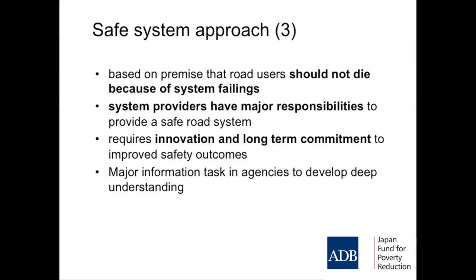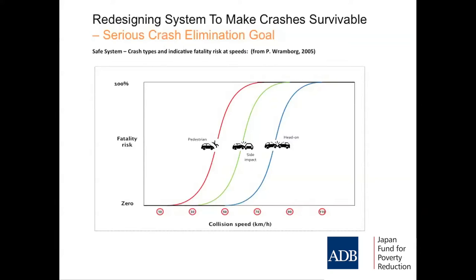Road users shouldn't die because of system failings. When we had no road, we just wanted one built so we could get our goods to market — that's understandable. But now communities are concerned about levels of death, and we realise the system is perhaps complicit in killing people unnecessarily. We need to retrofit the system. It's trying to indicate the effect of travel speeds in certain crash types — the effect on fatal outcomes.